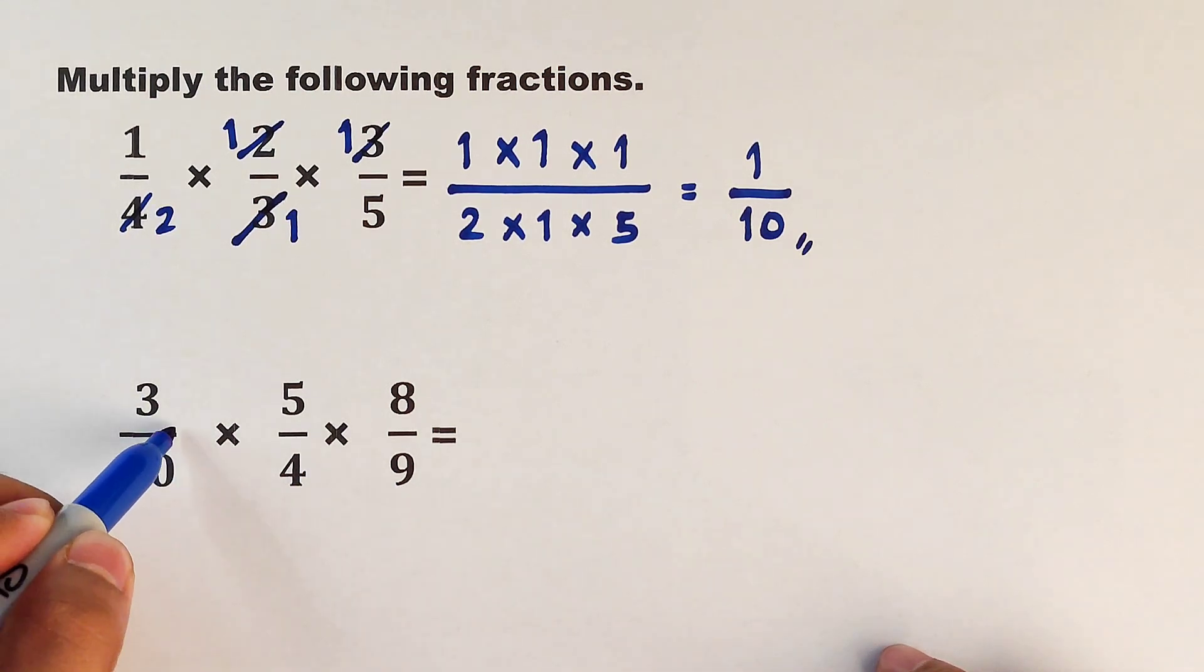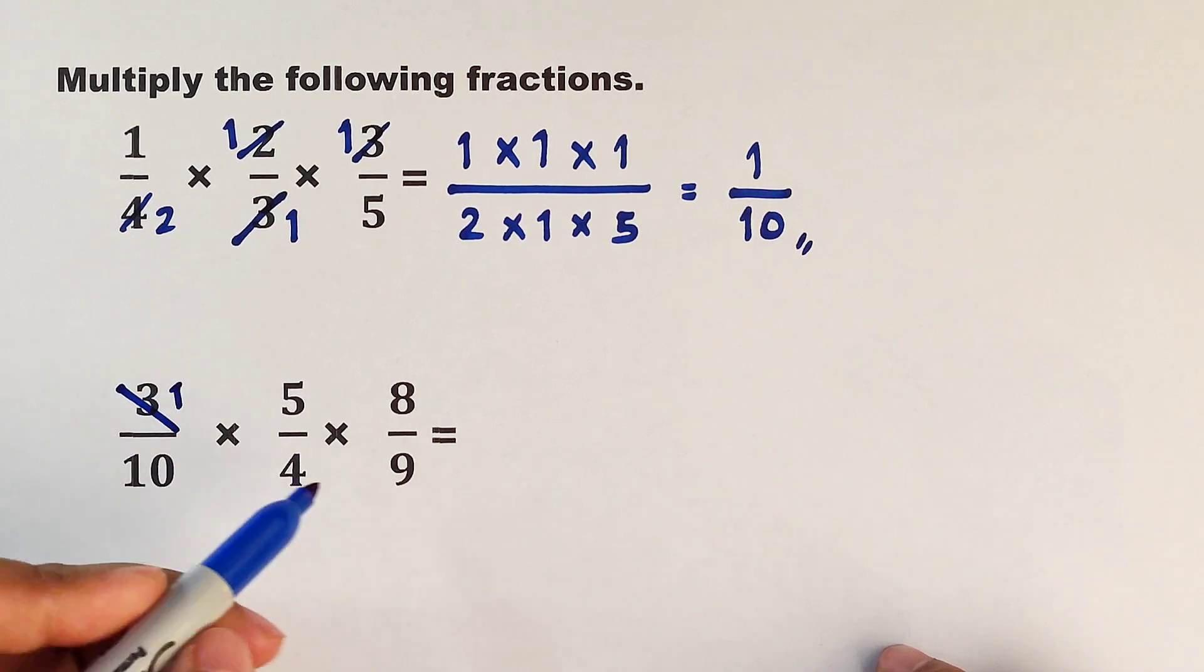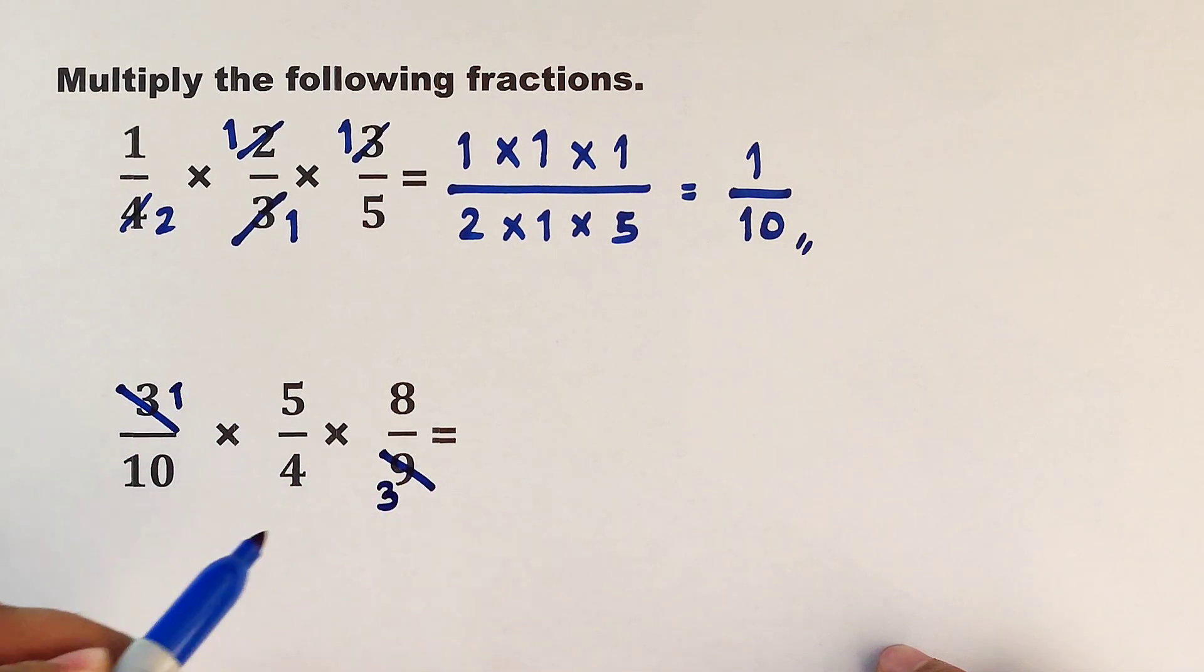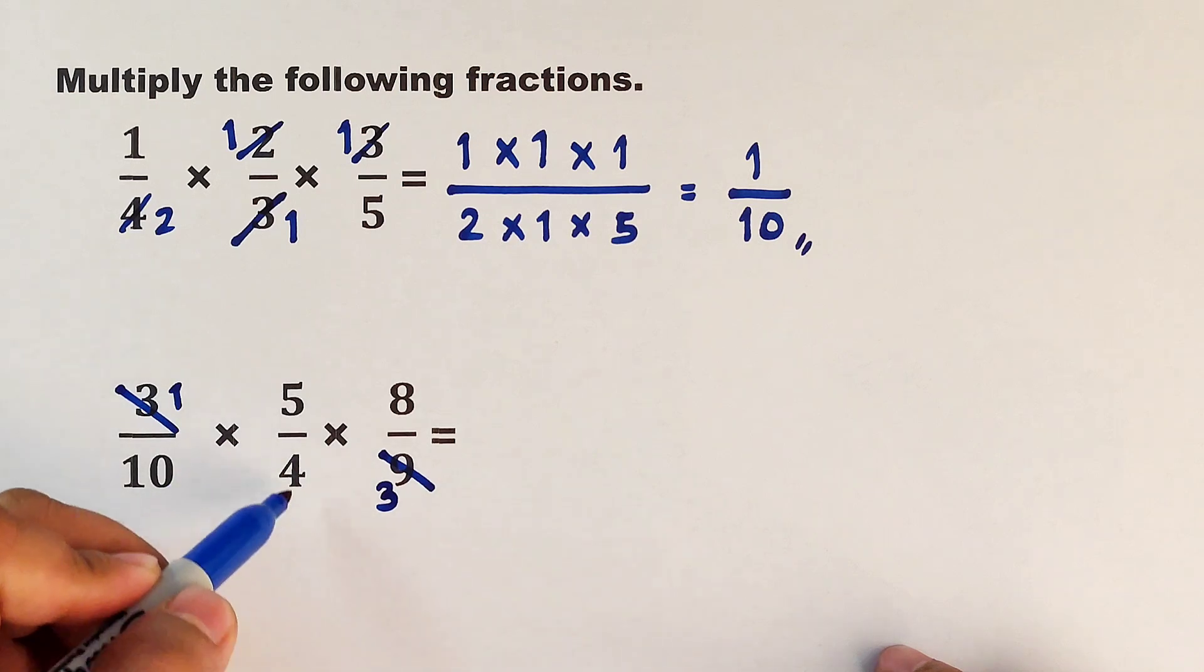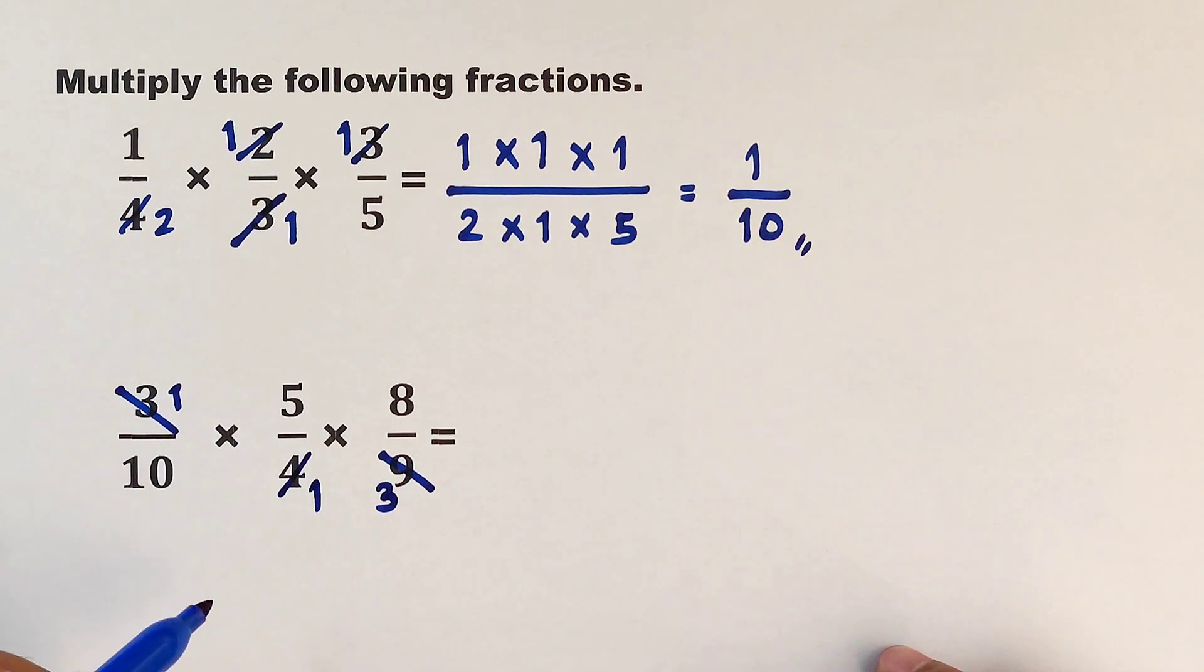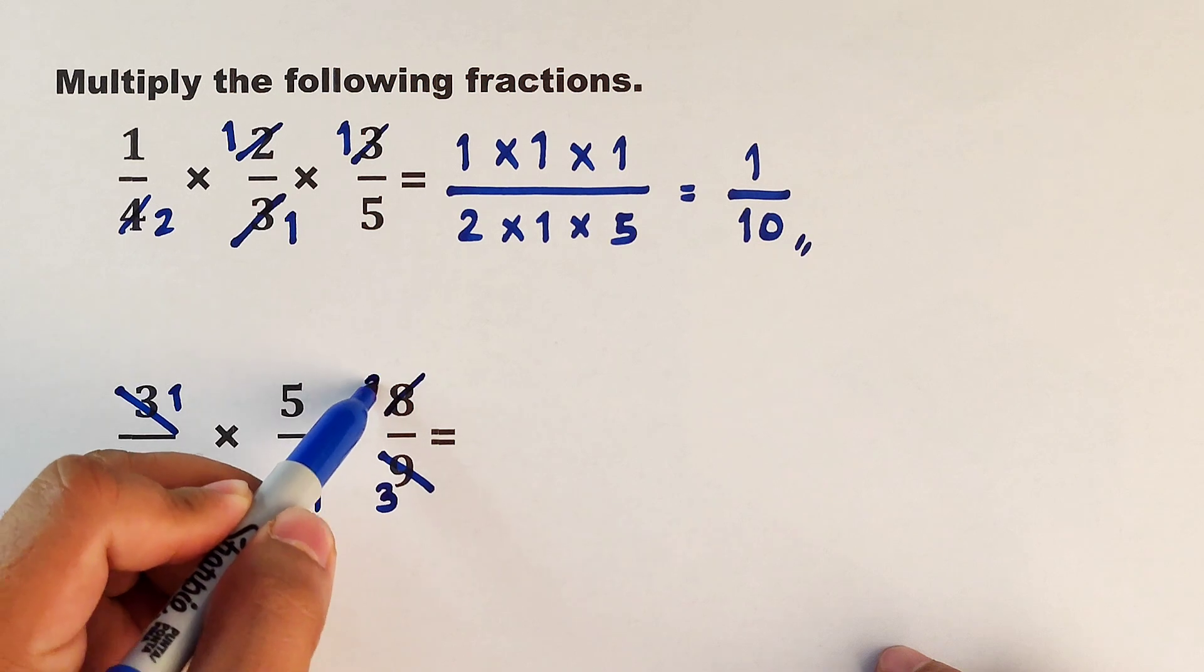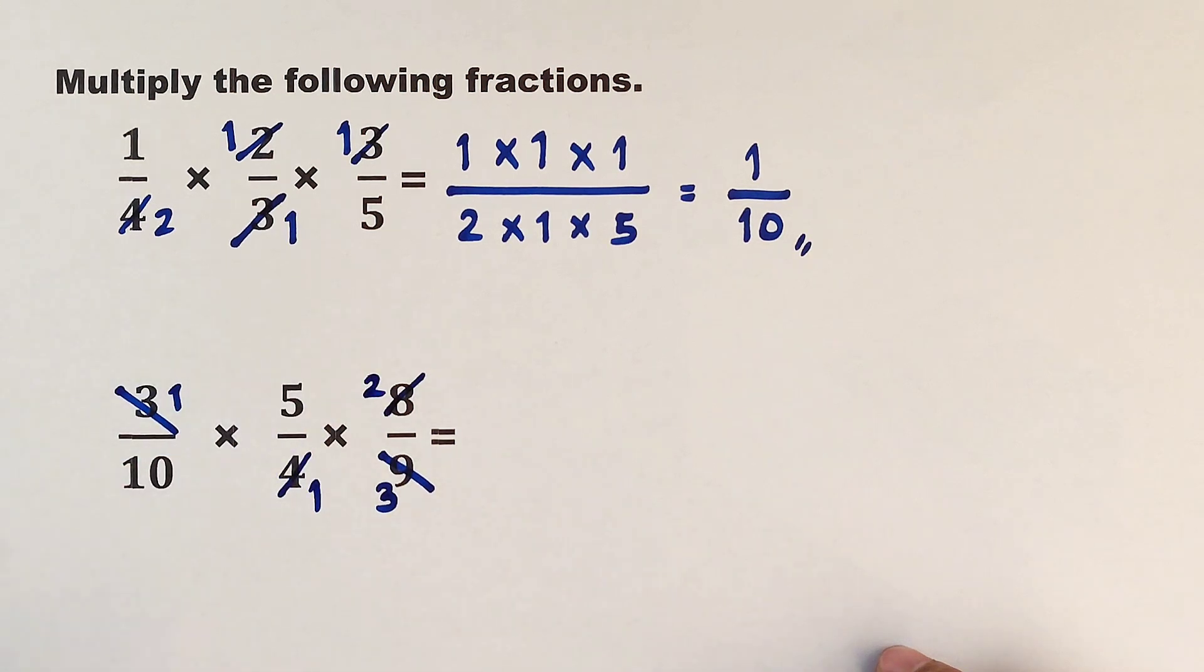Now what are the other numbers? 4 and 8. The greatest common factor between 4 and 8 is 4. How many 4s do we have in 4? We have 1. And for the 8, we have 2 fours. And the other numbers are 10 and 5. Their greatest common factor is 5.